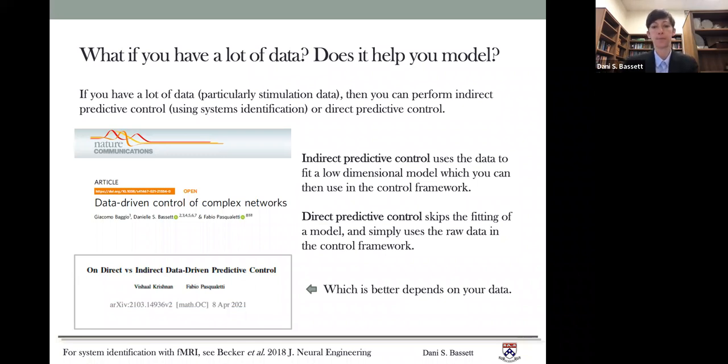So how are those two different from one another? So first, indirect predictive control uses the data to fit a relatively low dimensional model, which you can then use in the control framework. In contrast, direct predictive control skips the fitting of the model altogether and simply uses the raw data inside of the control framework. And if you're unsure which of these approaches might be better for your particular scenario or your particular scientific question or data set, I recommend this wonderful paper from Vishal Krishnan and Fabio Pasqualletti on indirect versus direct data driven predictive control, which really helps you to think through which of those may be most relevant for your problem.